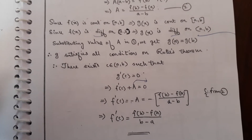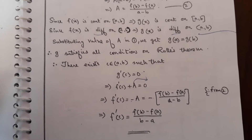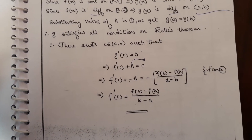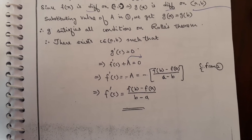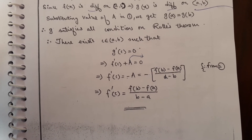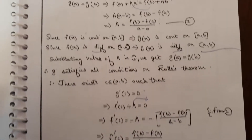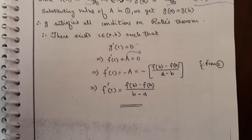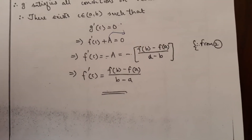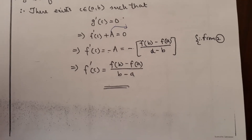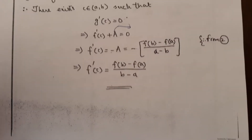Then there exists c belonging to (a, b) such that g'(c) = 0. So f'(c) + A = 0, which gives f'(c) = -A. From equation two, A = [f(b) - f(a)] / (a - b), so f'(c) = [f(b) - f(a)] / (b - a).